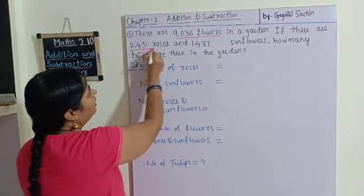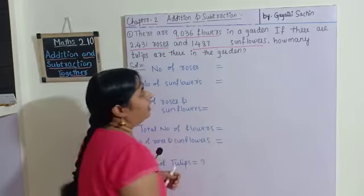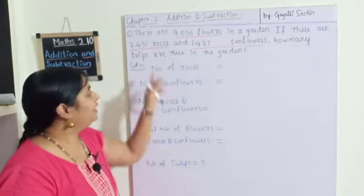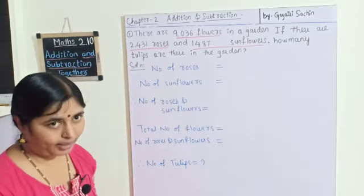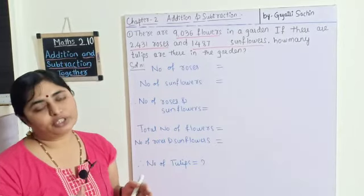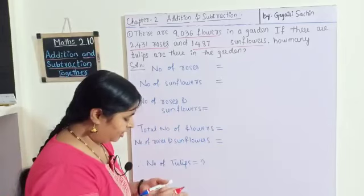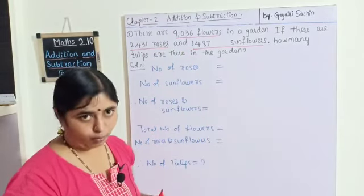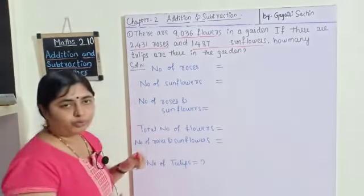Out of 9036 total flowers, 2431 are roses and 1487 are sunflowers, so the rest will obviously be tulips. We have three numbers, but we need to figure out which numbers to add and which to subtract. The total number of flowers we should not touch. Let's find out how many roses and sunflowers there are together — we have to add those two numbers.